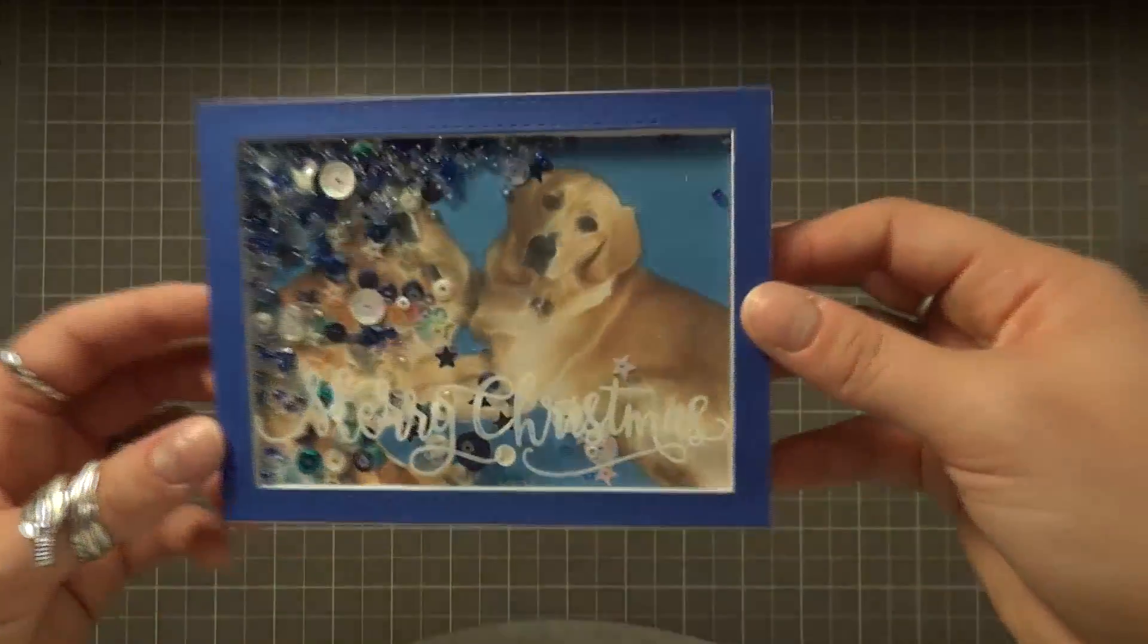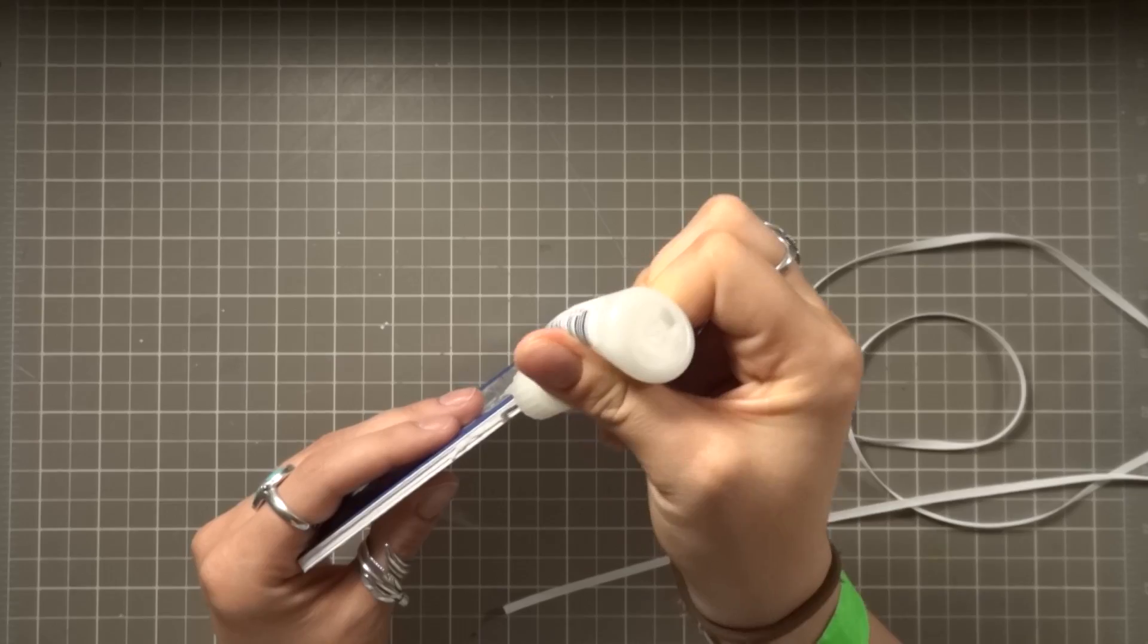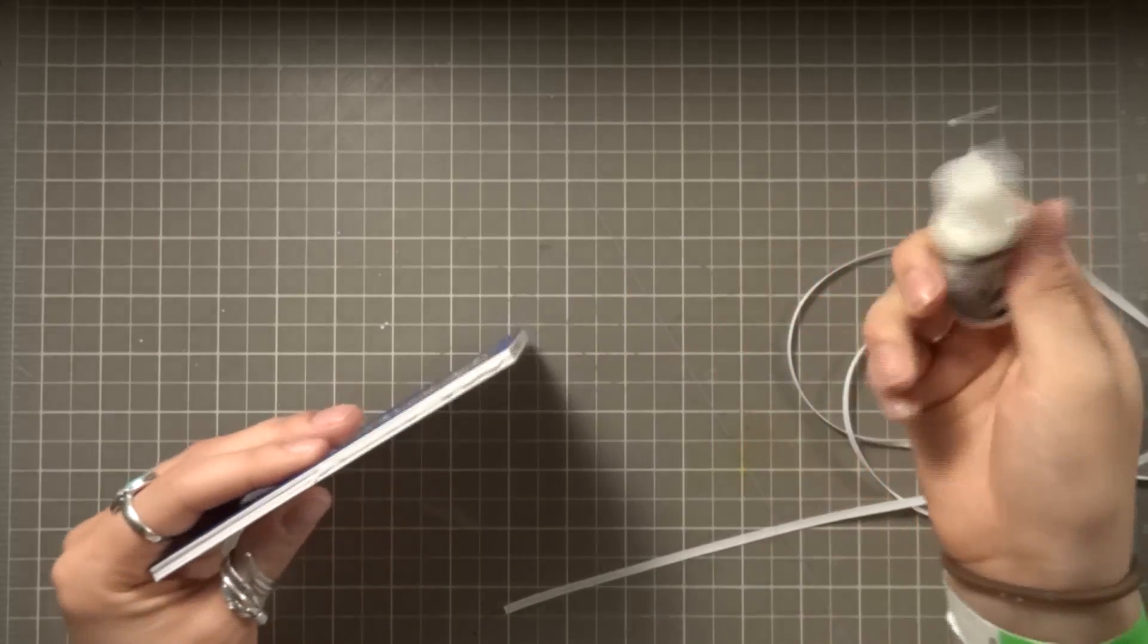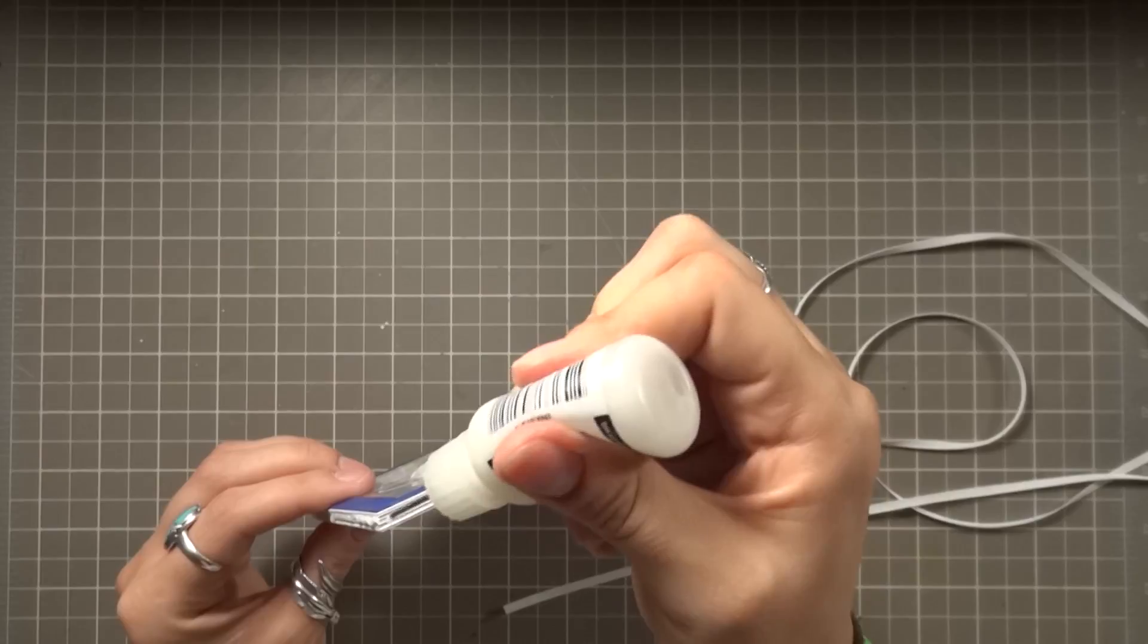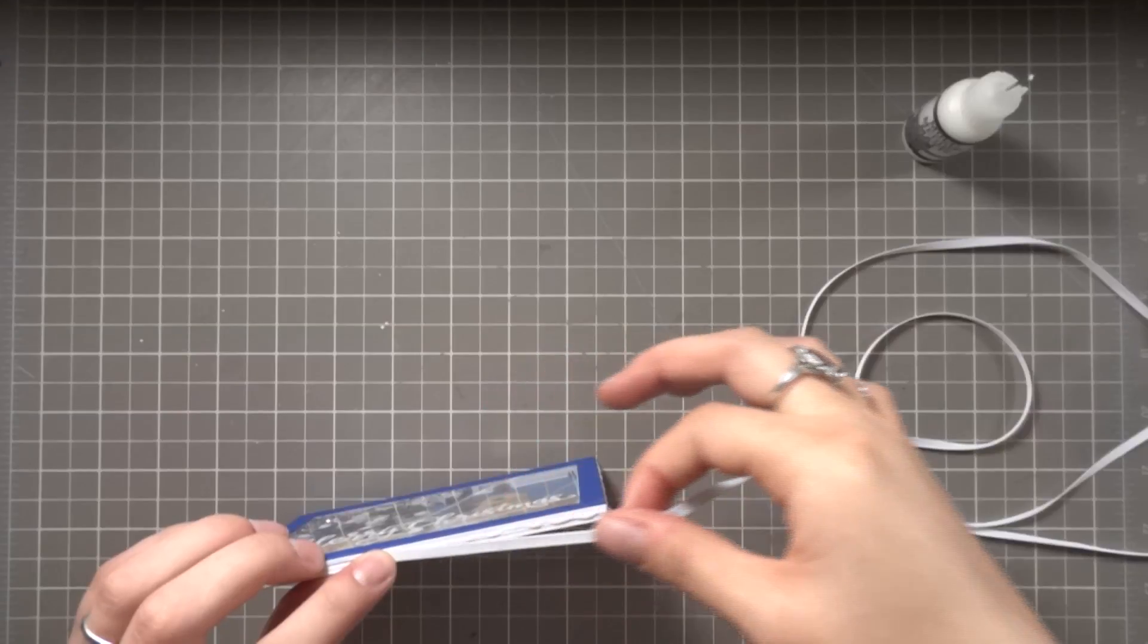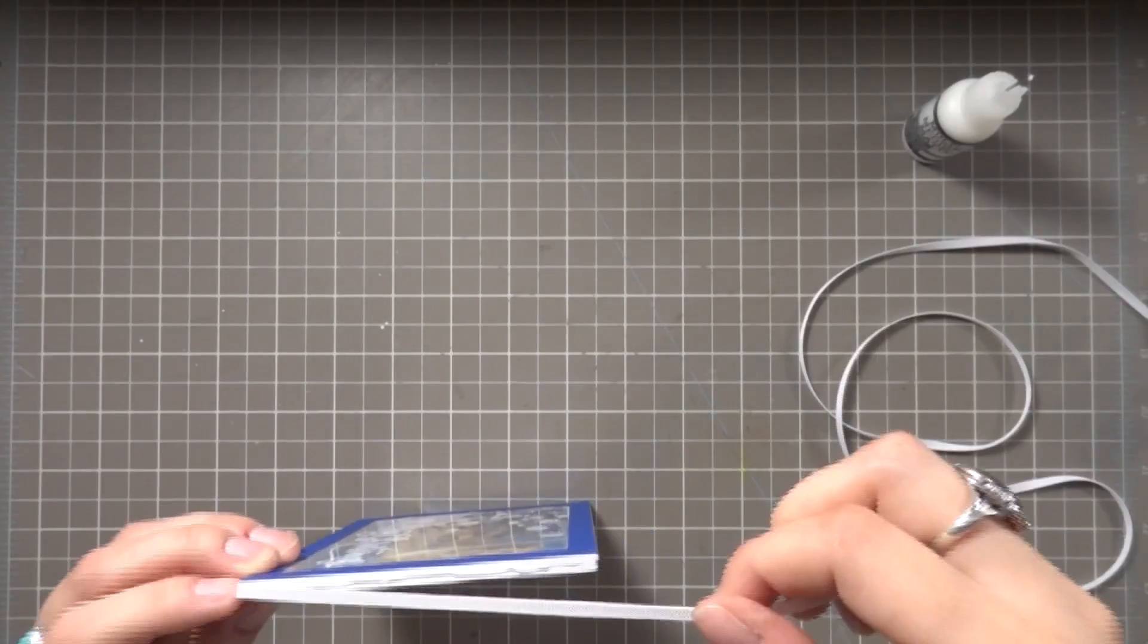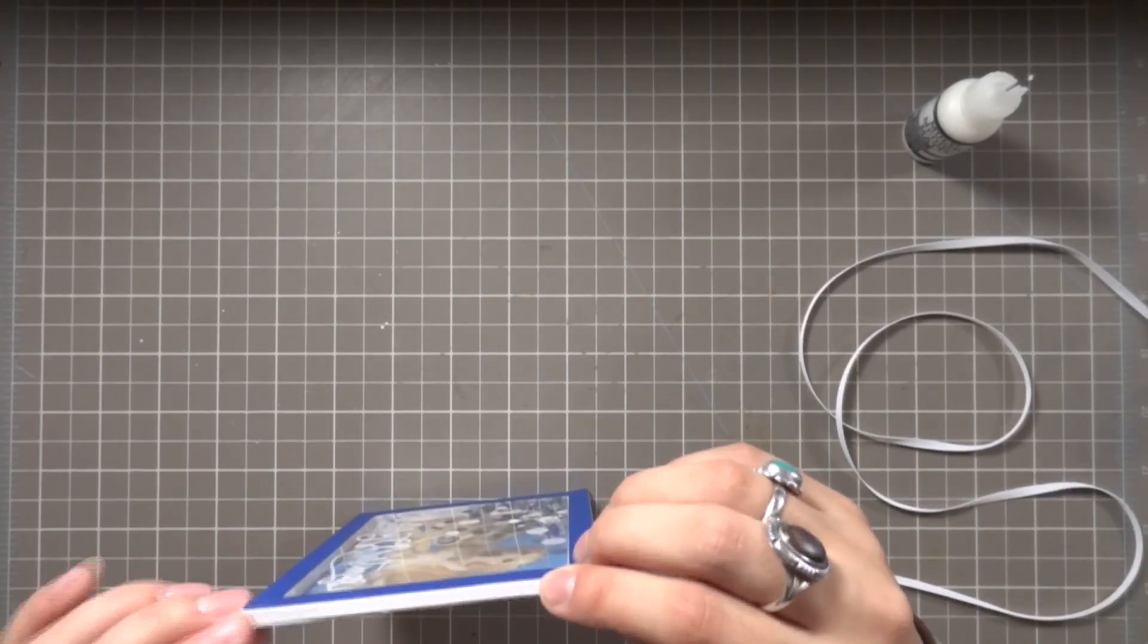You could be done here or adhere this onto a card base making it a card, but I'm making it into an ornament. So I'm running a line of multi matte medium around the border and I'm placing on my ribbon and adhering that into place. I'll go around with my adhesive and ribbon until it's adhered all around the entire border.